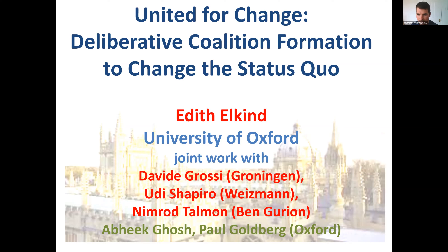I'm very happy to introduce today's speaker. Today we have Professor Edith Elkind, who is a professor of computer science at Oxford University. She obtained her PhD from Princeton in 2005 and has worked in the UK, Israel, and Singapore before joining Oxford in 2013. She works in algorithmic game theory with a focus on algorithms for collective decision-making and coalition formation. Edith has published over 100 papers in leading AI conferences and journals and has served as a program chair of several conferences, including WINE, AAMAS, ACM EC, and she will serve as program chair of IJCAI in 2023.